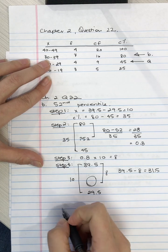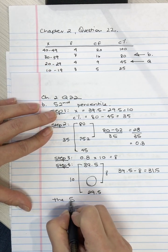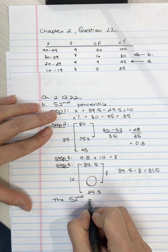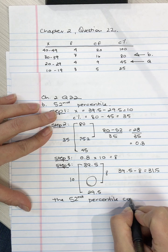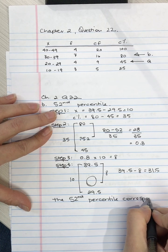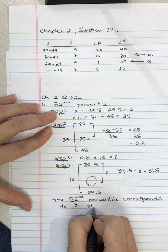So we do 39.5 subtract 8, which is equal to 31.5. So we can say that the 52nd percentile corresponds to X equals 31.5.